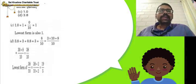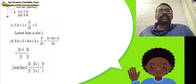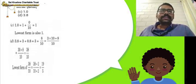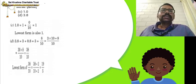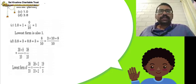Next one: 1.0. 1.0 can be written as 1 plus 0 by 10. 0 by 10 is 0. Therefore, 1 plus 0 is also equal to 1. So 1 is the lowest form of the decimal 1.0.